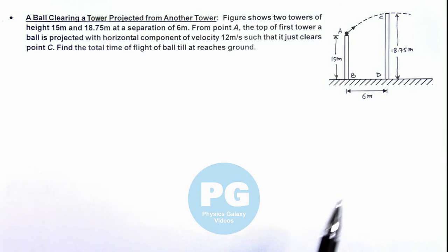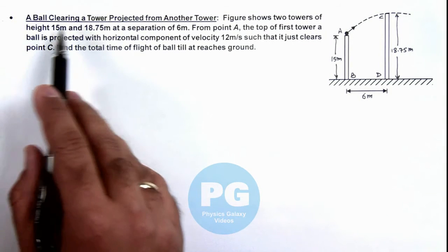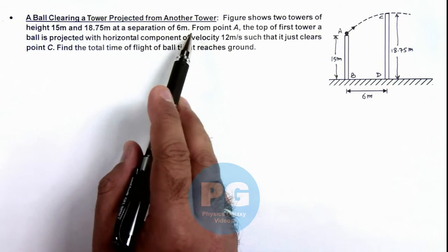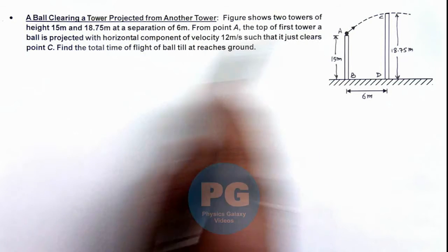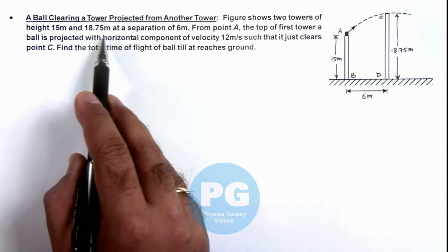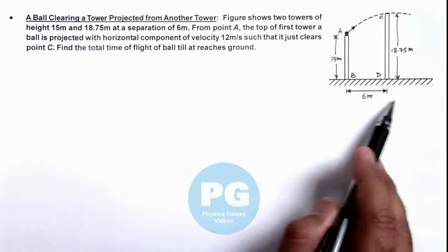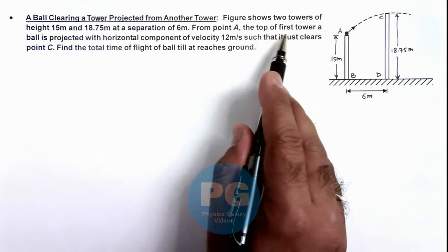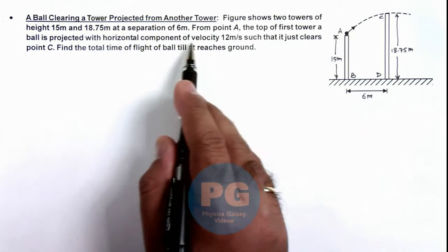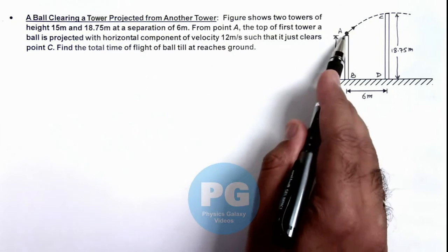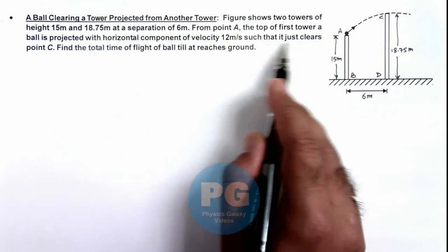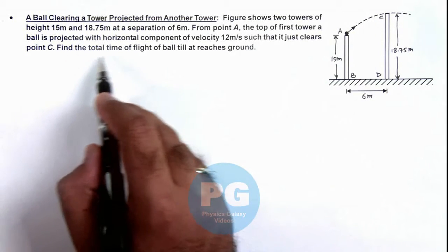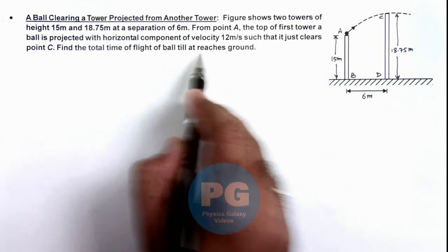In this illustration we'll see a situation where a ball clearing a tower is projected from another tower. The figure shows two towers of height 15 meter and 18.75 meter at a separation of 6 meters. From point A, the top of first tower, a ball is projected with horizontal component of velocity 12 meters per second such that it just clears point C, the top of another tower. We are required to find the total time of flight of ball till it reaches ground.